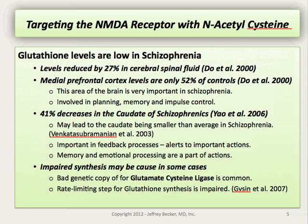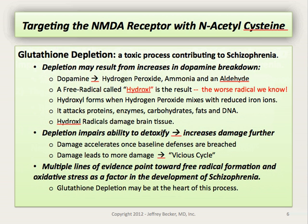Impaired synthesis of glutathione may be partly what's at work in these situations in schizophrenia. It's known that a bad genetic copy for the glutamate cysteine ligase gene is common in schizophrenia, and this is actually the rate-limiting step for glutathione synthesis. But it's likely that other factors are also at work, given that glutathione depletion is a multifactorial process.